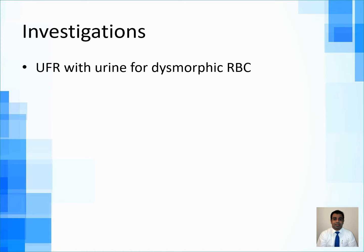For investigations, you obviously start with a urine full report (UFR) to confirm the presence of hematuria, since we discussed the mimickers. The UFR is extremely important when investigating hematuria because it gives many clues as to whether this is an upper or lower tract bleed. Red cell casts or granular casts indicate upper tract; proteinuria more than 2+ indicates glomerular cause; a significant amount of pus cells would indicate pyelonephritis.